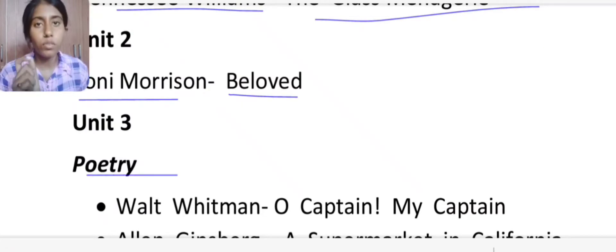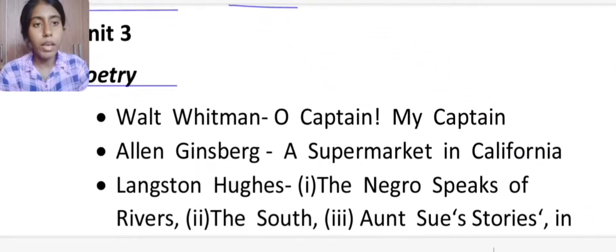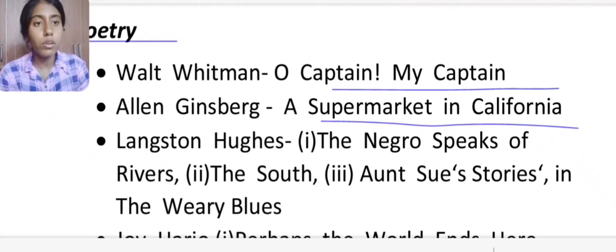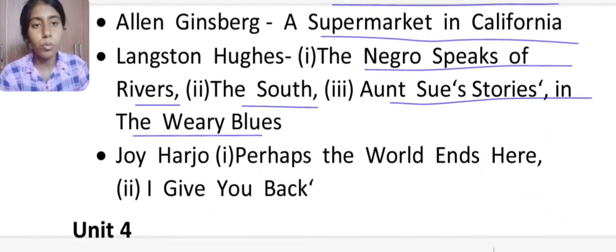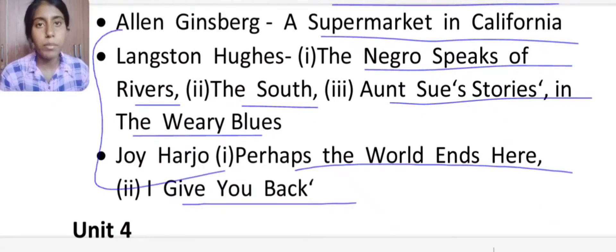Then Unit 3 you have to read the poetry. You have to read 2 novels of Glass Menagerie and Beloved. After that you have to read the poems: Walt Whitman's O Captain, My Captain, Allen Ginsberg's A Supermarket in California, Langston Hughes' The Negro Speaks of Rivers, The South and The Weary Blues, and Joy Harjo's two poems Perhaps The World Ends Here and I Give You Back.